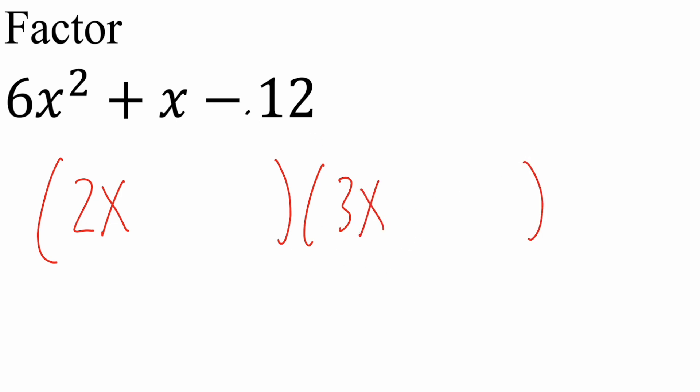Then I need to get negative 12, and there's again multiple ways to get negative 12. 1 times negative 12 in the reverse, meaning 12 times negative 1, 2 times negative 6 in the reverse, 3 times negative 4 in the reverse. So again, it's pretty lengthy trial and error, unless you're lucky.